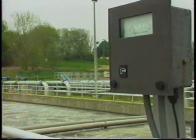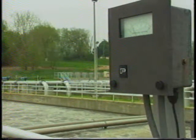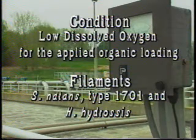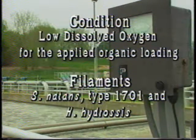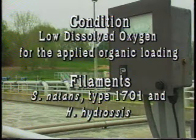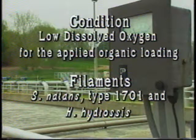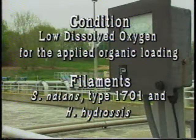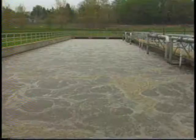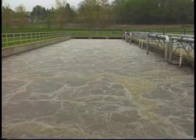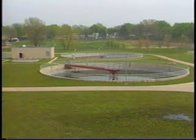There are five known causes of filament growth. Spiratilus natans, type 1701, and Haliscominobacter hydrosis are caused by low dissolved oxygen, or DO, concentration for the applied organic loading. This oxygen stress can occur in the aeration basin or even the final clarifier.